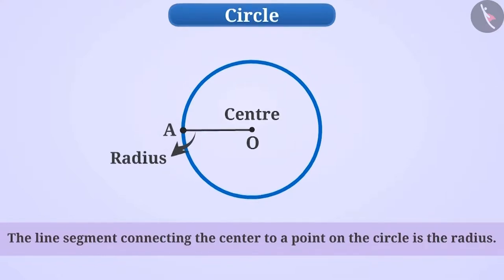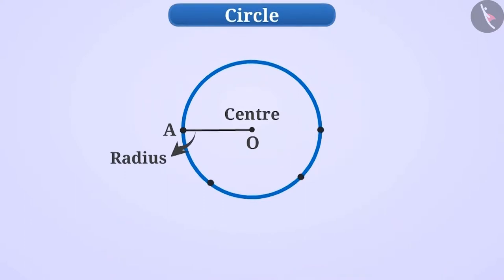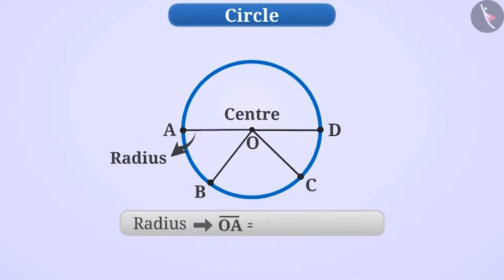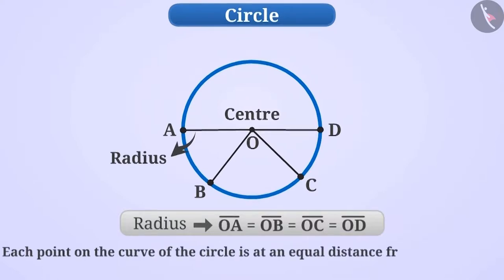If we take some other point on the curve like B, C, D, then all these points are at the same distance from O as the distance from O to A. So, we can say that OA equals OB equals OC equals OD. Therefore, we can say that every point on the curve of the circle is at equal distance from the center.